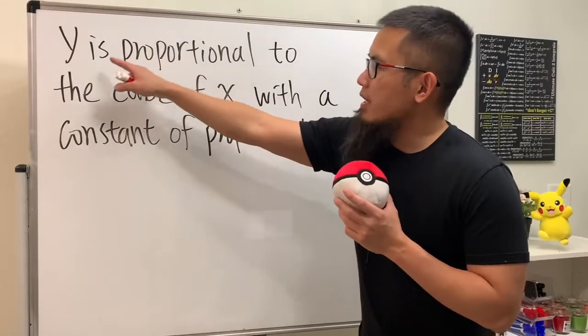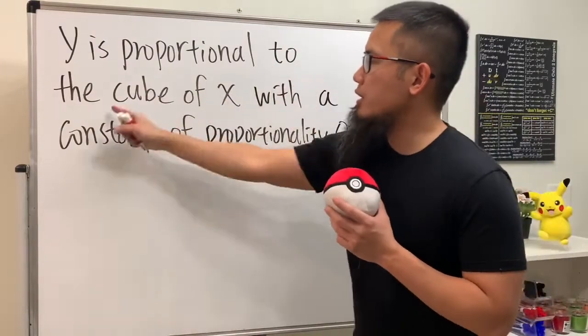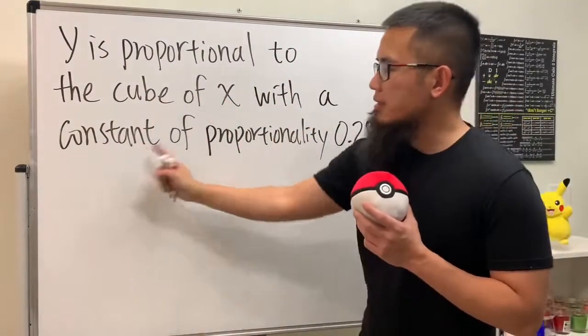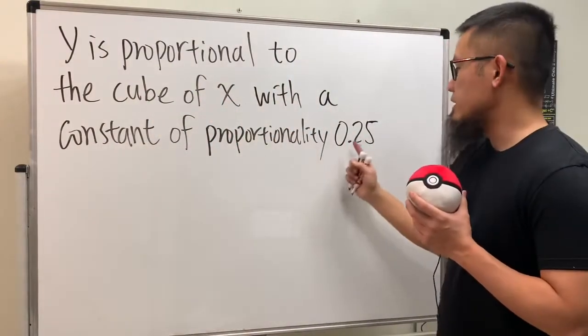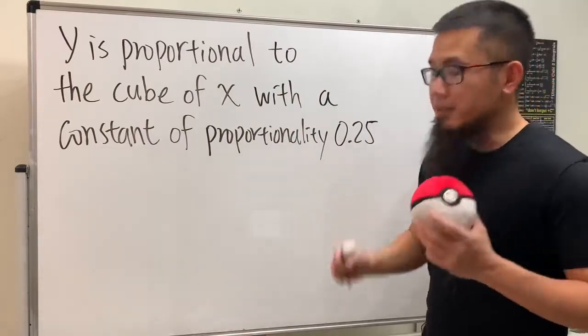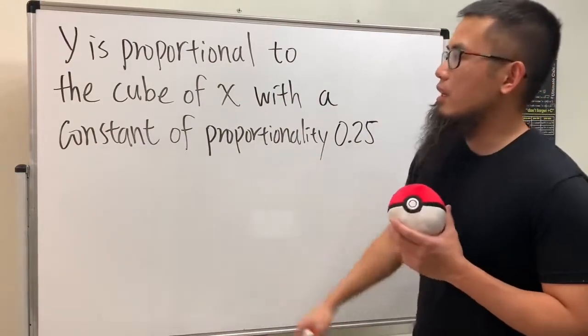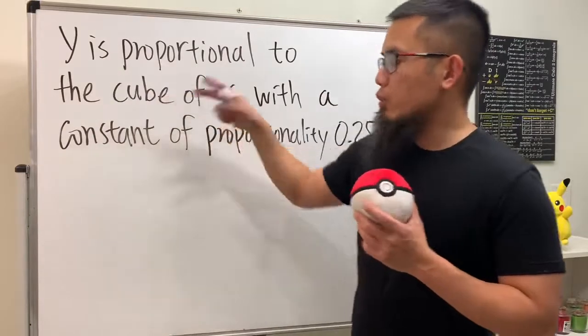Okay, check this out. It says y is proportional to the cube of x with a constant of proportionality being 0.25. This is how we can write an equation for this. Whenever we have y is proportional to something, well...